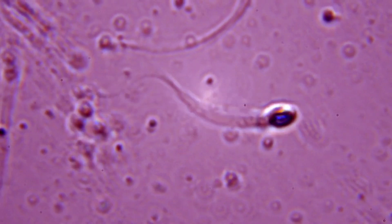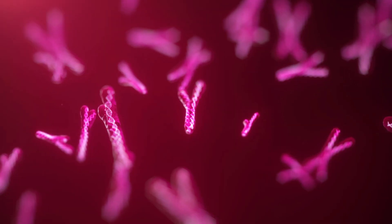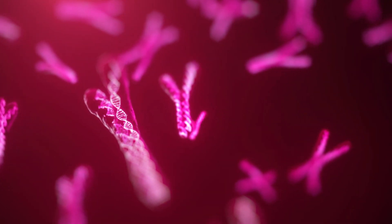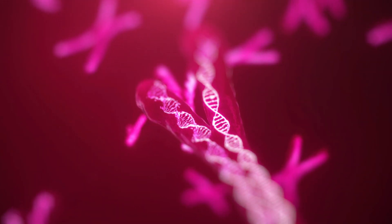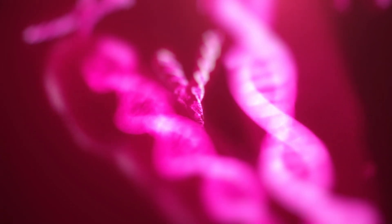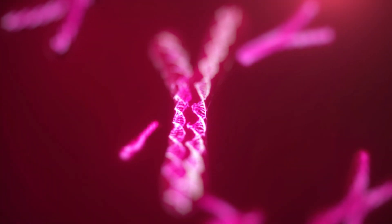Inside the egg, the male genetic material disperses, and a new membrane forms around it, forming a male pronucleus. This instant marks the creation of a unique genetic code, which determines the individual's sex, hair color, eye color, and countless other characteristics.